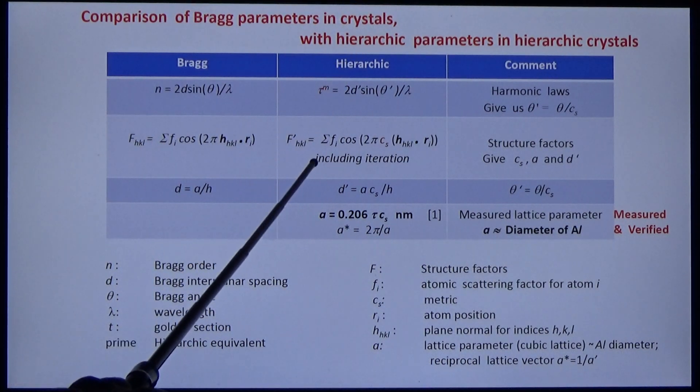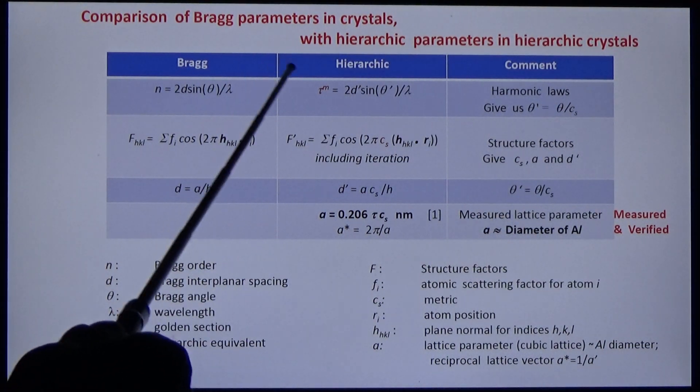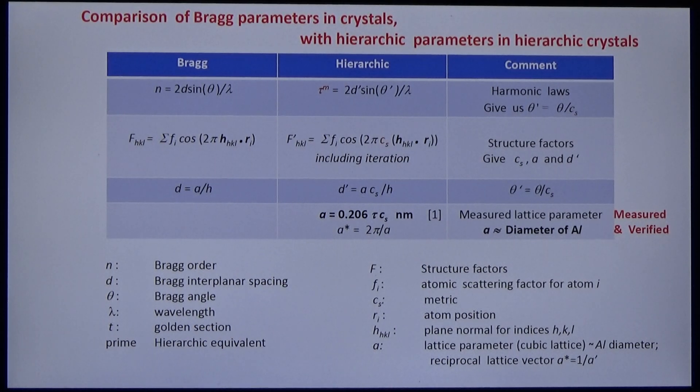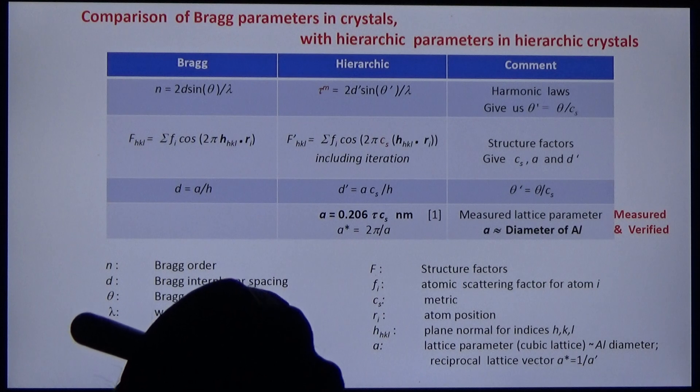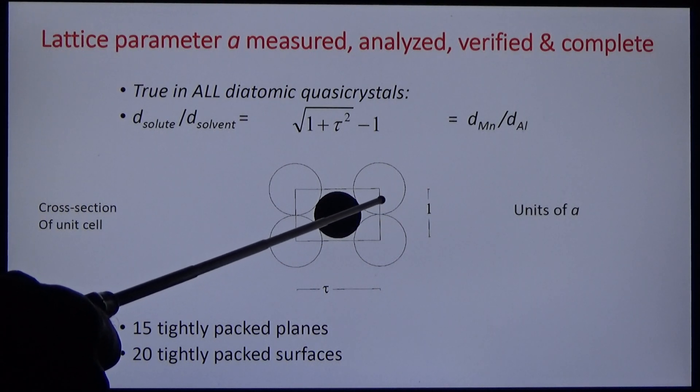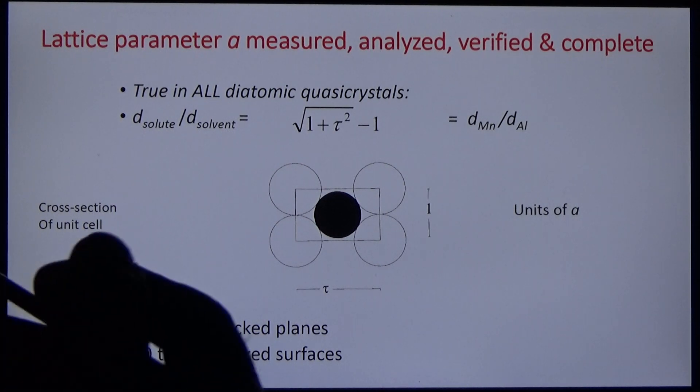The quasi-structure factor gives us CS and A—indeed A is the lattice parameter. It's the lattice parameter measured in the early days by several of us. It was measured by assuming Bragg's law because we had nothing else at the time. But it's now corrected with the metric and the index. And the output is a number that is equal to the diameter of aluminum and equal to the edge width of the unit cell. Measured, analyzed, verified, and complete.